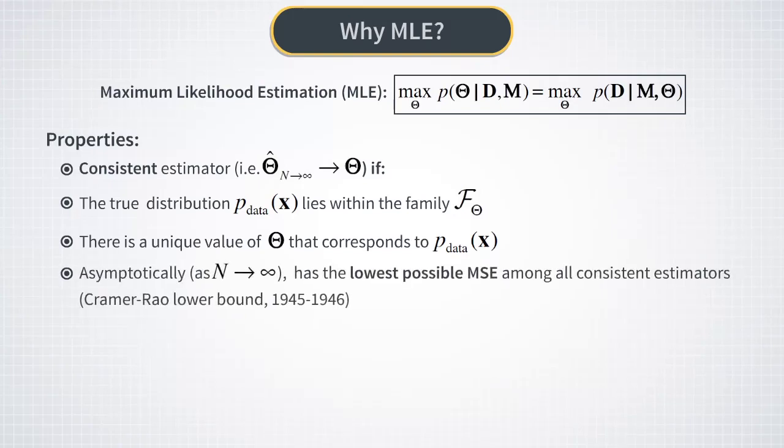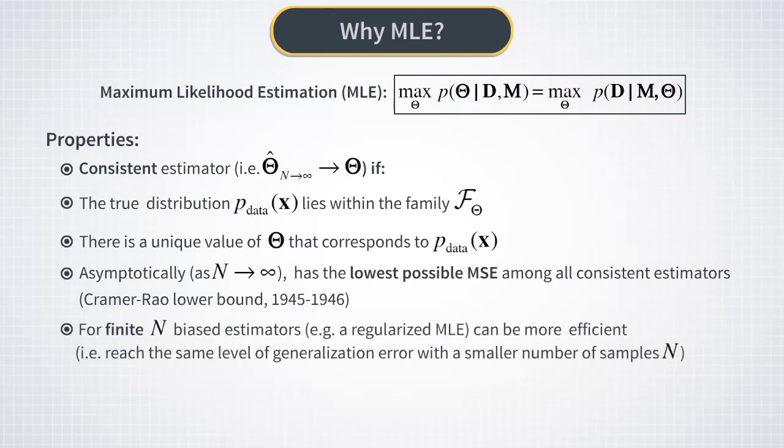Moreover, it turns out that when N is very large, an MLE estimator has the lowest variance among all possible estimators. This is known as the Cramer-Rao bound. When you deal with finite values of N, which is usually the case in practice, obviously all these nice guarantees are gone. This means in particular that some modifications of MLE estimators, for example regularized MLE estimators, might work better in practice than a plain MLE method.